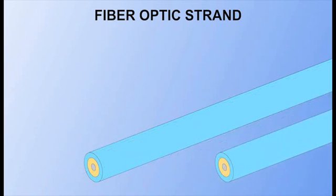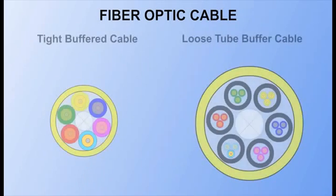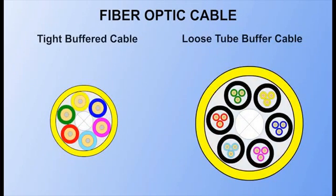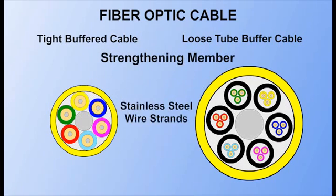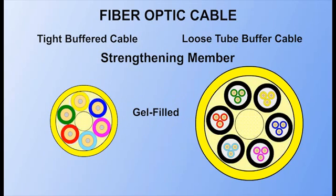Fiber optic strands are typically bundled into a cable. These strands can be grouped as either tight or loose buffered cables. Both types of cables contain some type of strengthening member, such as aramid yarn, stainless steel wire strands, or gel-filled sleeves.